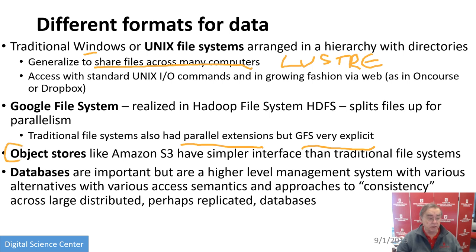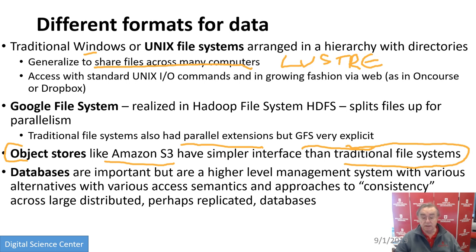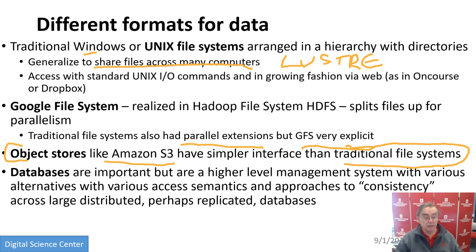Another important development was object stores like Amazon S3 or OpenStack Swift. They have an easier interface than traditional file systems, because you're accessing objects and not navigating hierarchical labeling systems. In early web search, Yahoo had hierarchical systems — knowledge was organized hierarchically. But that's not how search engines work now; you just type the information you want and Google or Bing finds it. Databases are still very important, but they build on top of these lower-level systems, with different access semantics and different approaches to consistency.